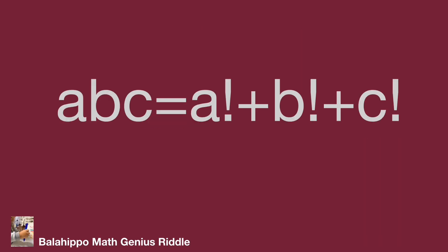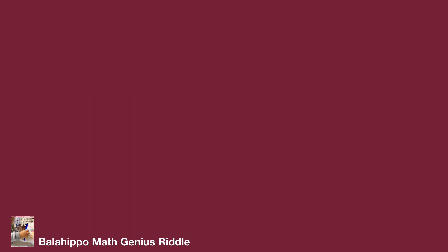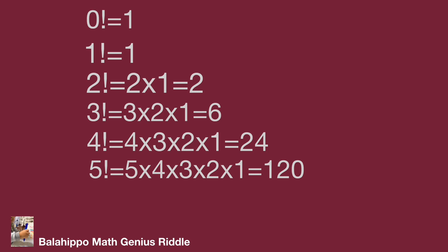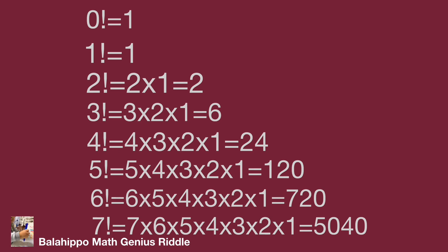The given information: three-digit number a, b, c equals a factorial plus b factorial plus c factorial. At the beginning, let's list the value for some factorials. 0! = 1, 1! = 1, 2! = 2, 3! = 6, 4! = 24, 5! = 120, and 6! = 720.